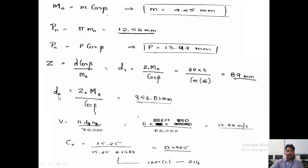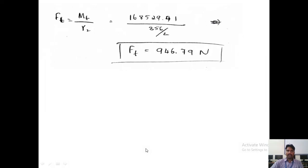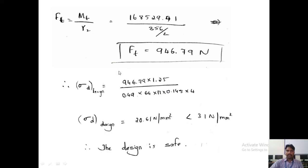Now that diameters are known, calculate pitch line velocity: V = π·D2·N2 / 60,000. Velocity falls between 10 and 20 m/s, so use the Barth equation: Cv = 15.25 / (15.25 + V) = 15.25 / (15.25 + 15.84) = 0.4905. Calculate tangential load Ft = MT / R2 = 946.79 N. Compute design stress: sigma_D_design = 20.61 MPa, which is less than allowable stress for gear of 31 MPa. Therefore, design of gear is safe.